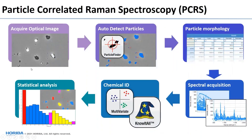How does Particle Finder perform PCRS? It takes an optical image first and detects particles — the particle has different contrast from the background — automatically performing particle morphology analysis including locations, counts, sizes, ellipse ratios, and circularity. It then records Raman spectra from individual particles, with an option to record a map of a particle as well. You can analyze the Raman spectra using multivariate analysis or by searching reference Raman libraries for identification. You then get statistical analysis — size distribution of chemical ingredient A, ellipse ratio distribution of chemical ingredient B, and so on.